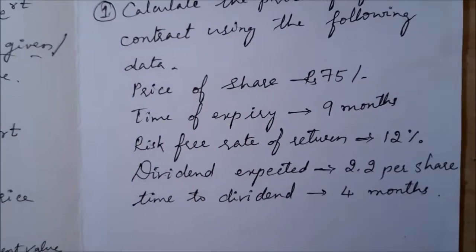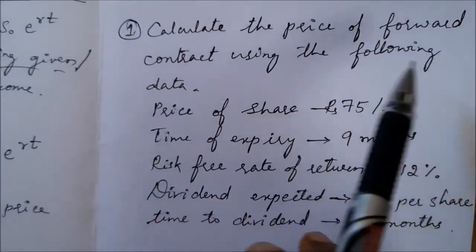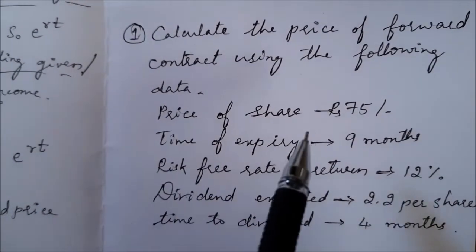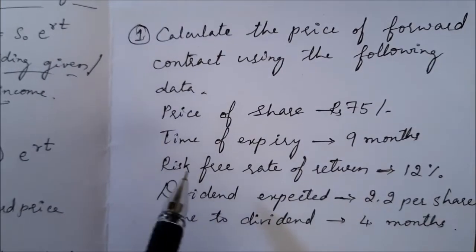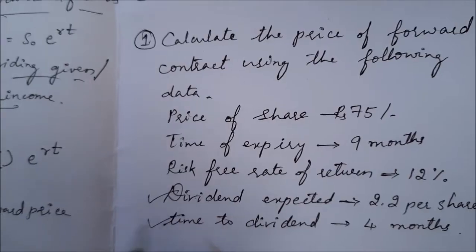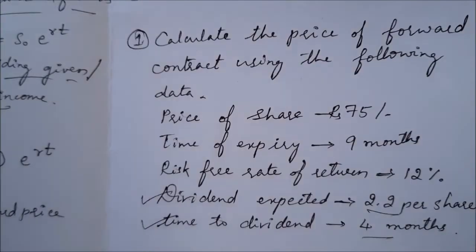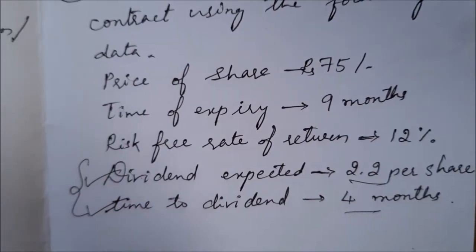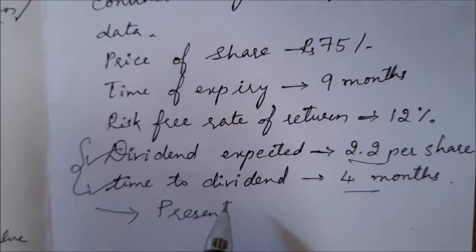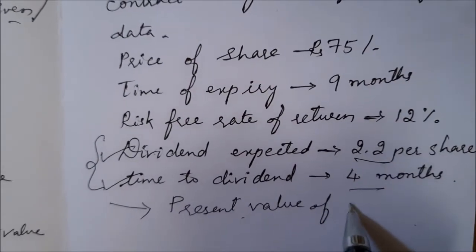Let's see one problem. Calculate the price of a forward contract using the following data: spot price of a share is ₹75, time of expiry is 9 months, risk-free rate of return is 12%. Two additional things are included: dividend expected is ₹2.2 per share and time to dividend is 4 months. These two values are needed to calculate the present value of income.